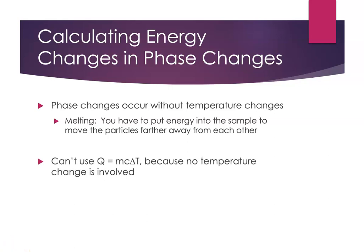Because of this, we can't use Q equals MC delta T to calculate the energy change involved. There is no delta T, which would imply Q is zero, but we know that we have to put energy into a sample to melt it. We know we have to put energy into a sample to boil it, and we have to pull energy out of the samples to freeze them or to condense a gas. And so we need a different equation.